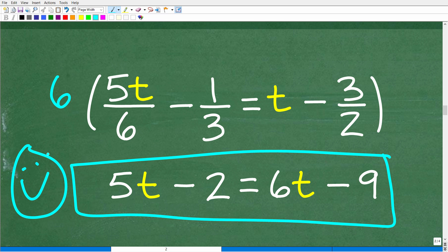We have five t minus two is equal to six t minus nine. Let's go ahead and take the next step, which of course is having you quickly subscribe to my YouTube channel.